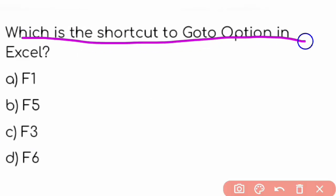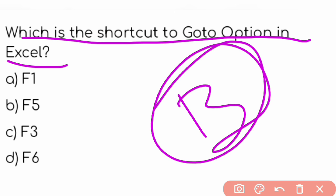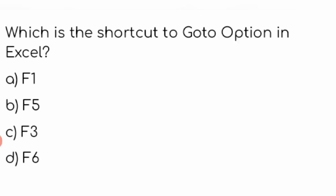Which is the shortcut to go to option in Excel? The answer is option B, F5. Next one.